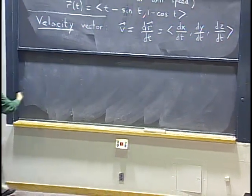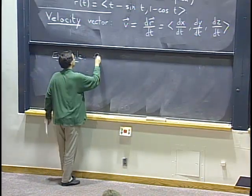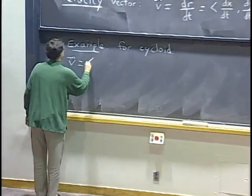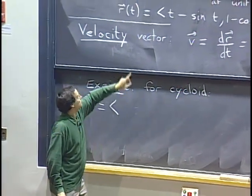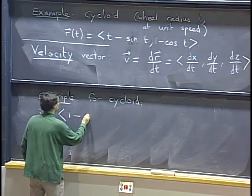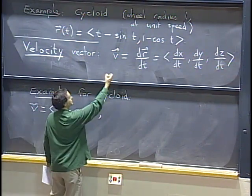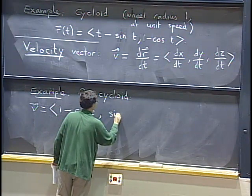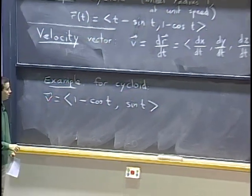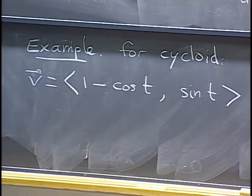Let's see what it is for the cycloid. In the example of a cycloid, what do we get when we take the derivative of that formula? The derivative of t minus sine t is 1 minus cosine t. The derivative of 1 minus cosine t: the derivative of 1 is 0 and the derivative of minus cosine t is sine t. So the velocity vector is (1 minus cosine t, sine t).